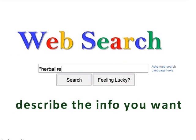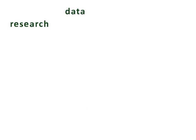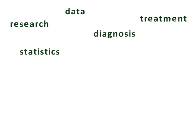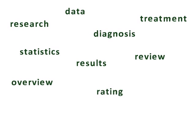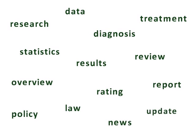Another trick is to add words that help guide the search engine toward the type of information you want. These could include words like research, data, diagnosis, treatment, statistics, results, review, overview, rating, report, policy, law, news, or update.